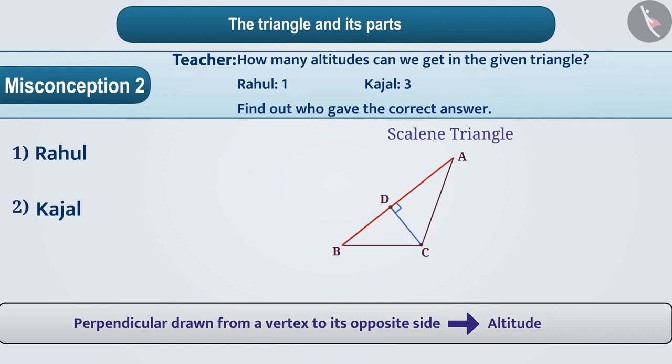So, they think that only one altitude can be obtained in the given figure. With this understanding, they answer option 1, which is a wrong answer.